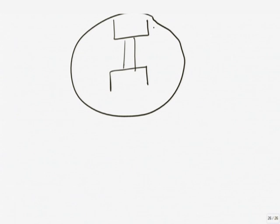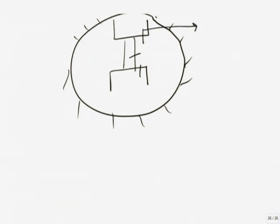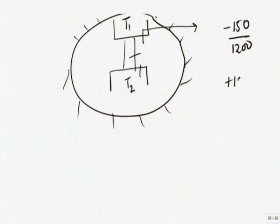Another way to tackle this same problem: consider this isolated system and find out the entropy change of each part. There are three parts. The conductor is in steady state — no entropy change. The hot reservoir at 1200 K loses 150 W, so its entropy change rate is minus 150/1200. The cold reservoir at 500 K gains 150 W, so its entropy change rate is plus 150/500. The units of entropy are joules per Kelvin, or for a rate, watts per Kelvin.